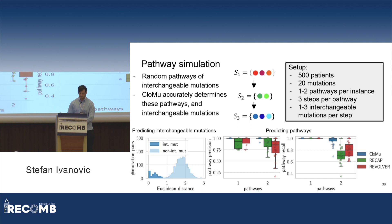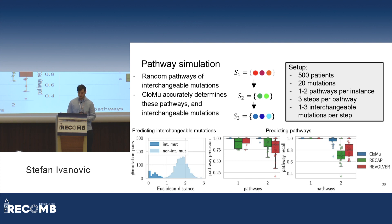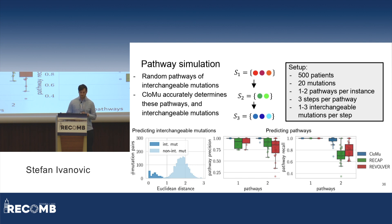Finally, there are simulations with pathways of interchangeable mutations. CLOMU accurately determines these pathways as well as the interchangeable mutations. In the histogram, dark blue represents pairs of interchangeable mutations showing the Euclidean distance between their latent representations, and light blue represents pairs of non-interchangeable mutations. CLOMU very nicely separates these, where interchangeable mutations have very similar latent representations, whereas non-interchangeable ones do not. Additionally, CLOMU determines these pathways of interchangeable mutations very effectively, beating any heuristic based on existing methods.